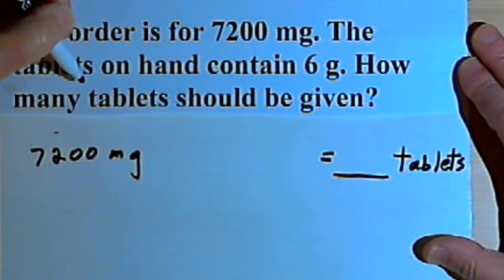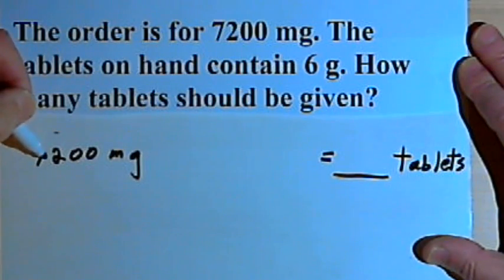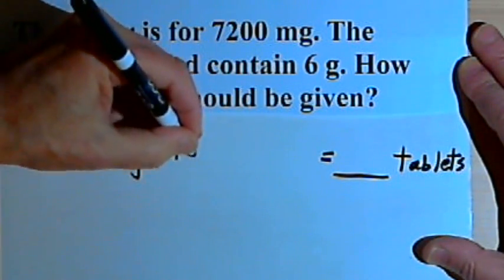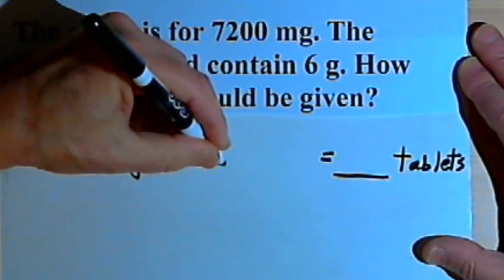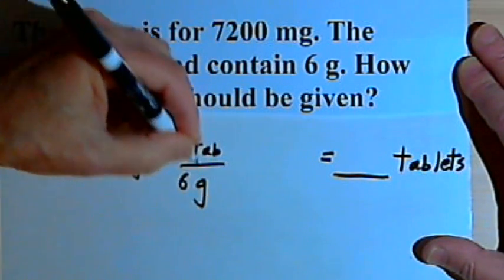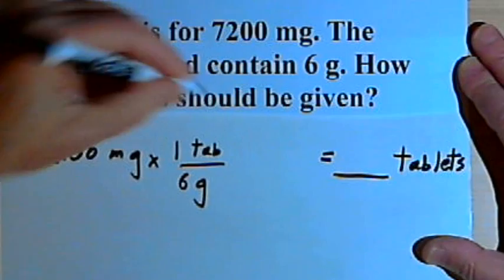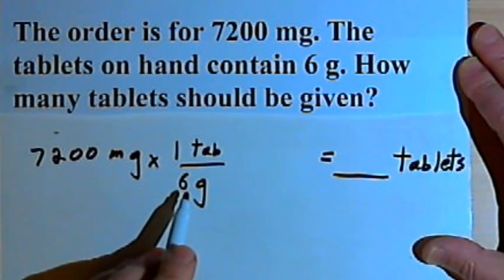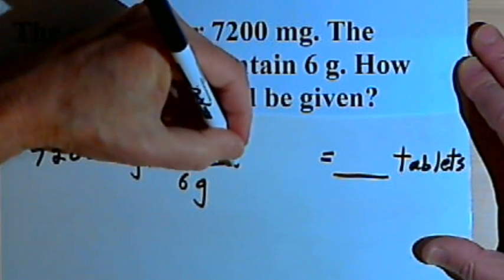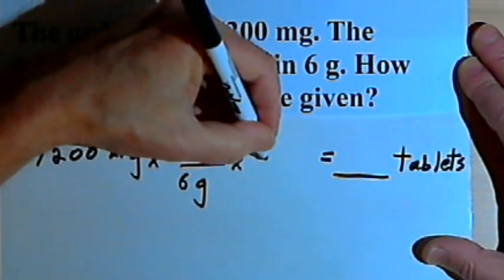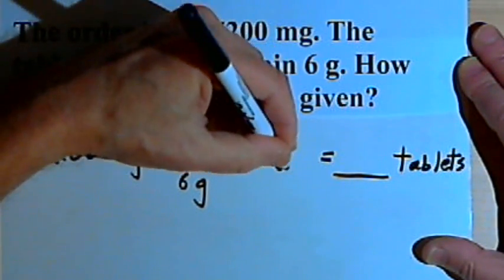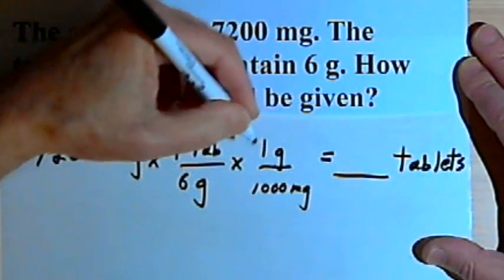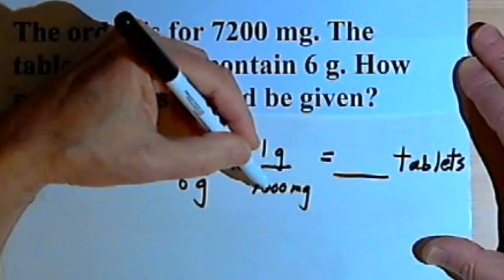Each tablet contains 6 grams, so I'm going to take that 7,200 milligrams and multiply it by the fraction 1 tablet over 6 grams. Now notice I've got milligrams and grams, so I'm going to have to do some unit conversion. I'll make another fraction, and that's going to be 1 gram over 1,000 milligrams, since 1 gram is equal to 1,000 milligrams.